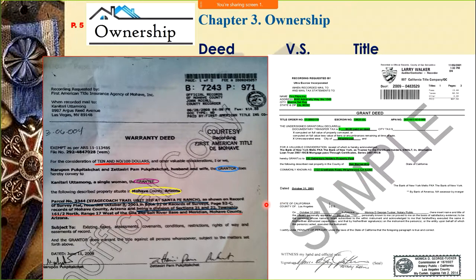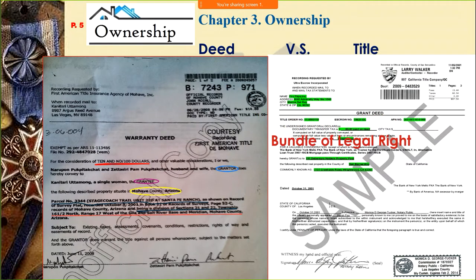That's the deed. Remember: a deed is the tool to transfer your property to others. Now, title is different. At least with a deed you can see it — it's one piece of paper. Title, on the other hand, is more like something invisible — it's more than just a piece of paper, more than just a piece of property.